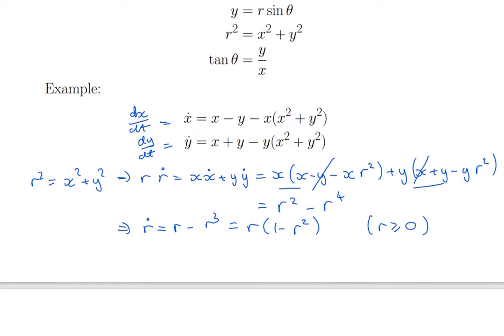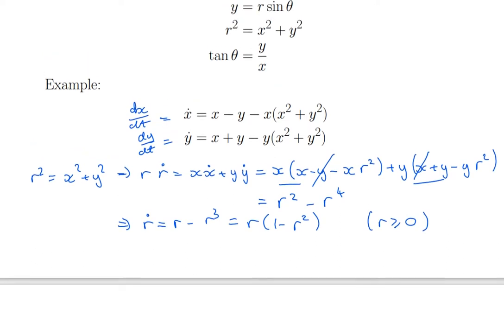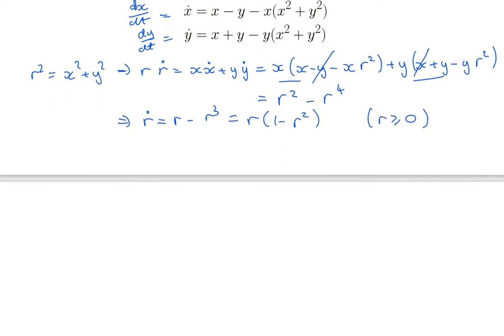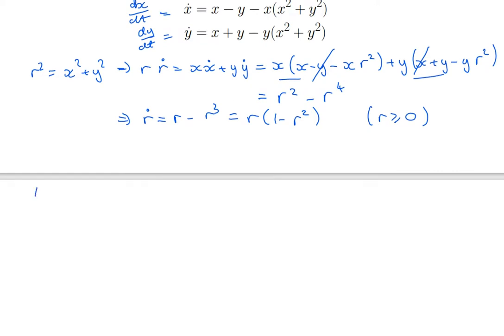Now I see why I left myself a blank page. I want to take tan theta equals y over x and differentiate that with respect to t. tan theta equals y over x. Therefore, sec squared theta times theta dot is equal to x y dot minus y x dot, all divided by x squared.